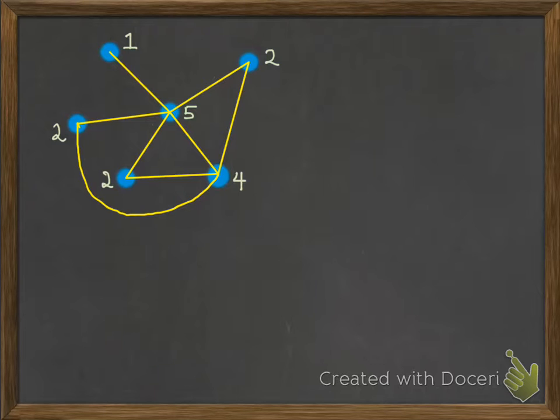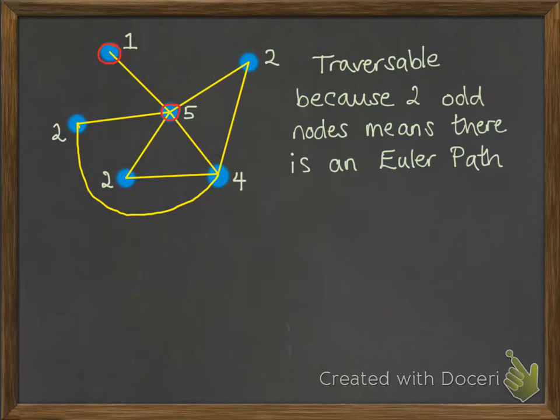I'm just counting the edges that are going in and out. We can see now we've just got these two nodes that are odd, which means we will be able to create an Euler path. This means it's traversable. Two odd nodes means there is an Euler path. It will need to start and finish at those two odd nodes. So something like this.